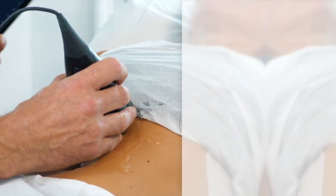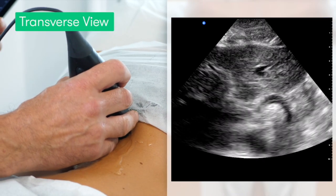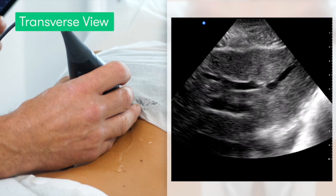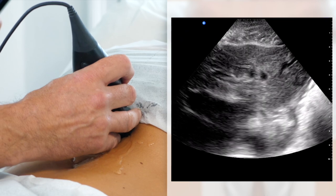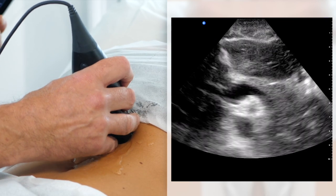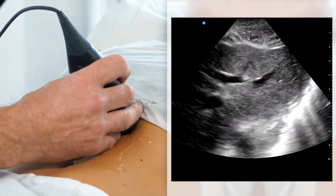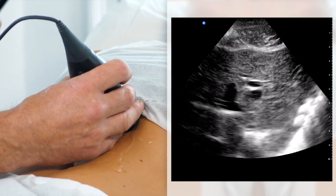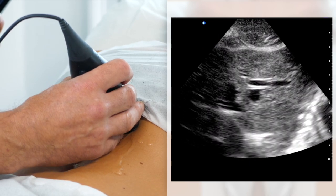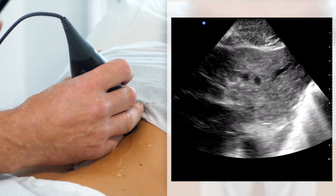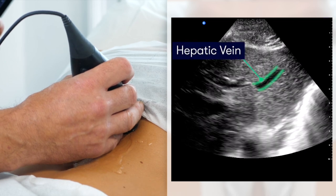To begin our scan, we start in the midline, looking at the left lobe of the liver in a transverse section. We can see the left lobe of the liver is the triangular structure in the middle of the field. Within the liver, we can see the vessels. There are two types of vessels: the portal veins, which have an echobright margin on the walls of the vessels, and the hepatic veins, which unlike the portal veins, don't have an echobright margin.